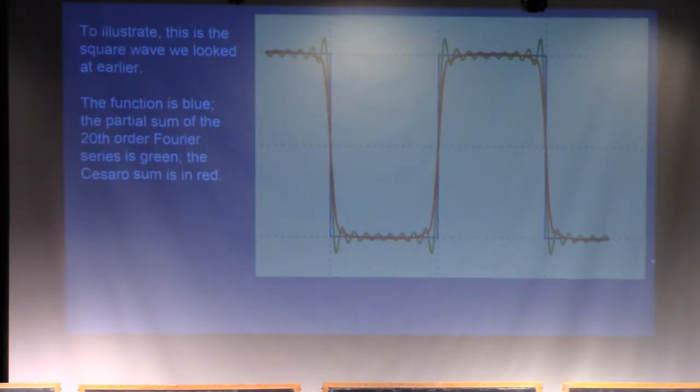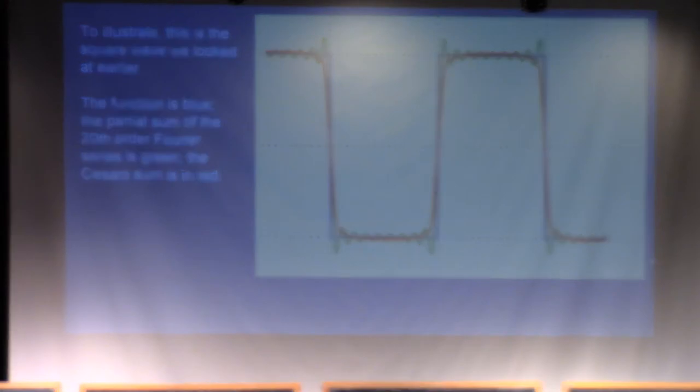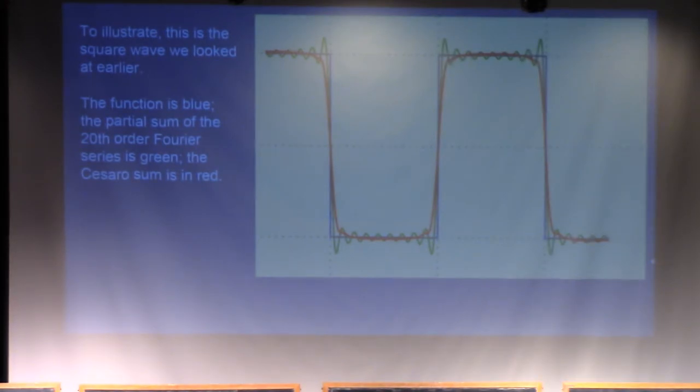So the Cesaro sums eliminate the oscillation around the discontinuities that arise from the Fourier series. So here we have the step function in blue, and we have the first 20 terms of the Fourier series in green, which really oscillate around the discontinuities. And then we have the Cesaro sum, which still has a little bit of undershoot and overshoot, but doesn't oscillate nearly as much.